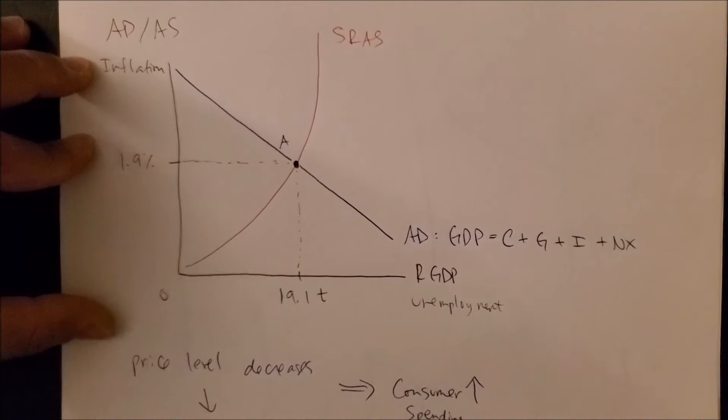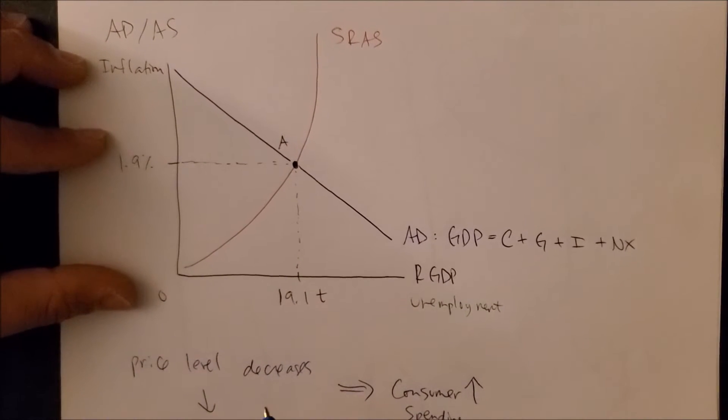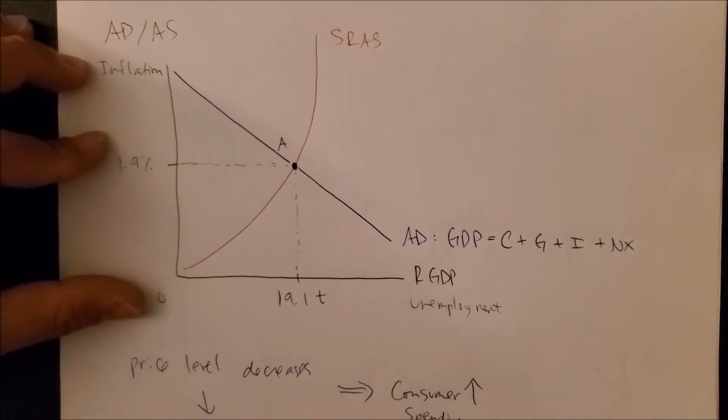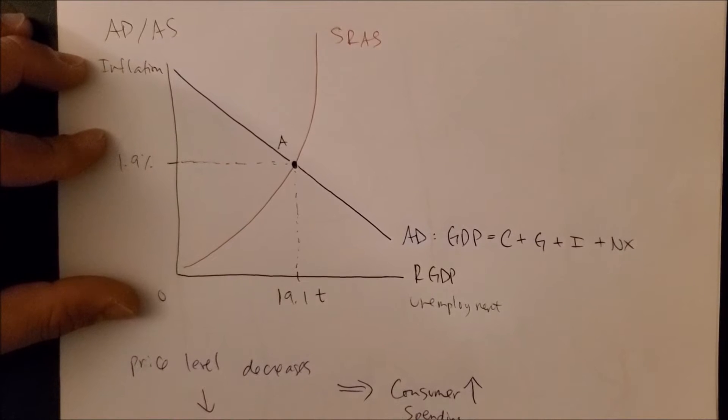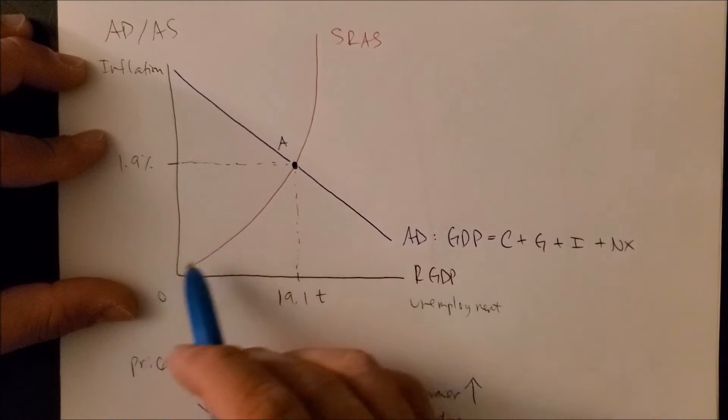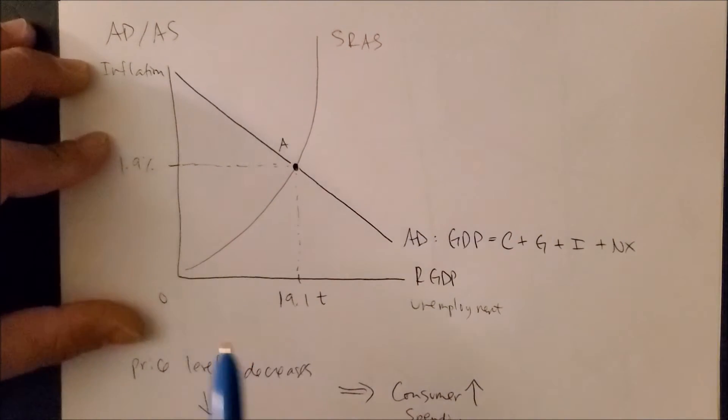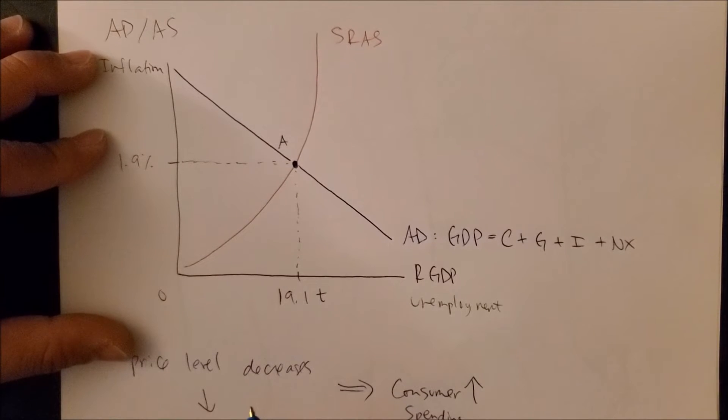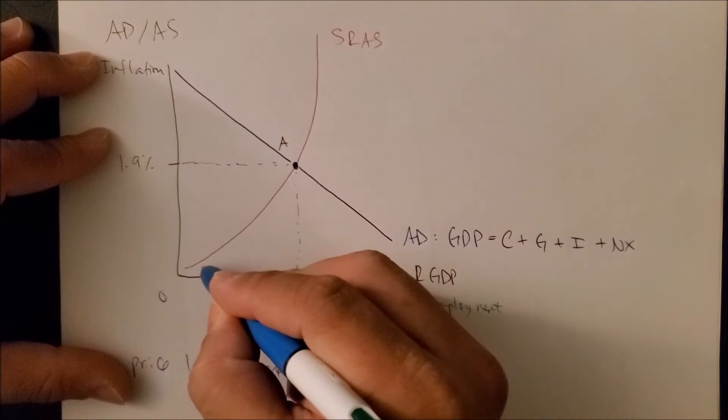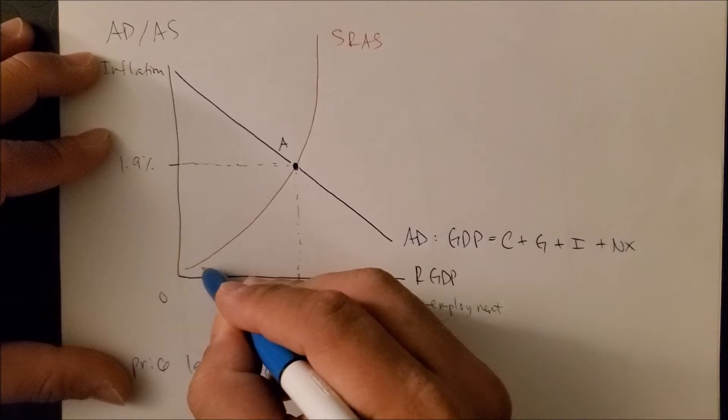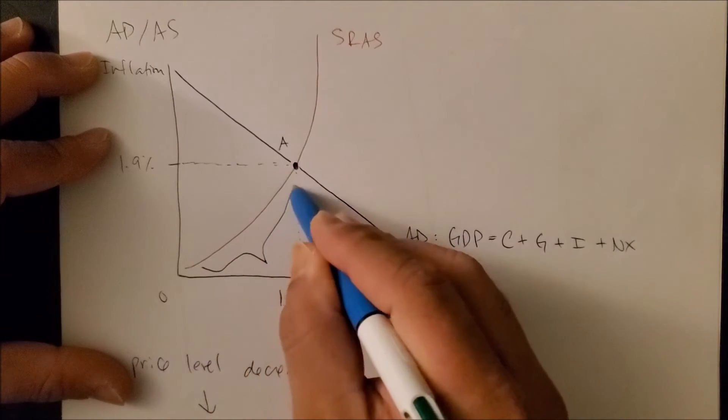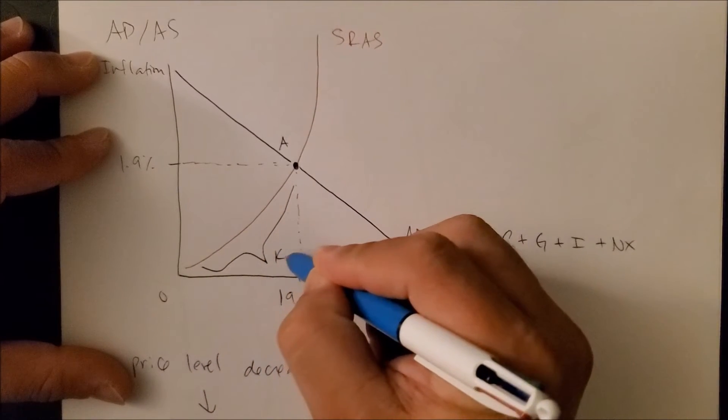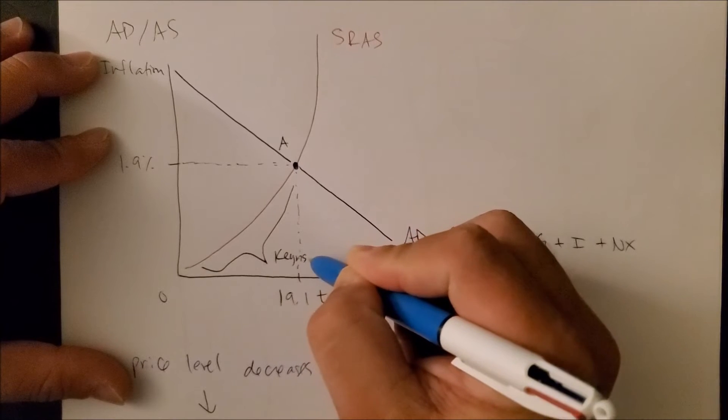Now I want to show you, when focusing on the SRAS curve, that there are two distinct economic schools of thought that are represented in both the SRAS curve. The first school of thought is called the Keynesian school of economics, and that can be found at zero up to point A. We can call this the Keynesian school.